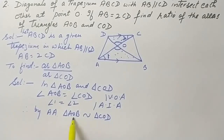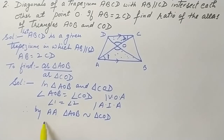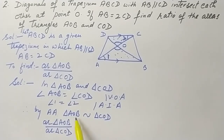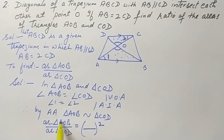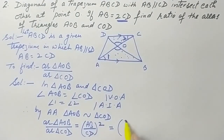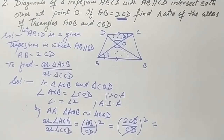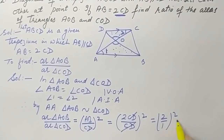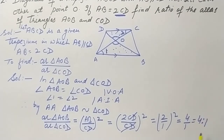Now applying the area theorem: since triangle AOB is similar to triangle COD, the ratio of their areas equals the square of the ratio of their corresponding sides. Taking AB and CD as corresponding sides: area of △AOB / area of △COD = (AB/CD)² = (2CD/CD)² = (2/1)² = 4/1. So the ratio of the areas is 4:1.